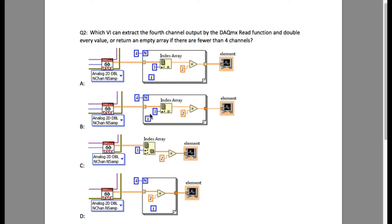In C, what is going on is by using the index array you select the fourth channel output and then you are multiplying it with 2 to double it.